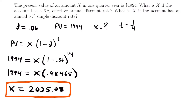What would X be if the account has an annual 6% simple discount rate? We'll have a very similar setup — the only thing that changes is our present value factor. Instead of 1 minus D to the T power, we're going to have the present value equal to X times (1 minus D times T). That is the end of the quantity. The only difference is the present value factor: in the first case our discount rate was compounded so we had the power of T, and in this case it's a simple rate so we multiply the discount rate by the amount of time.